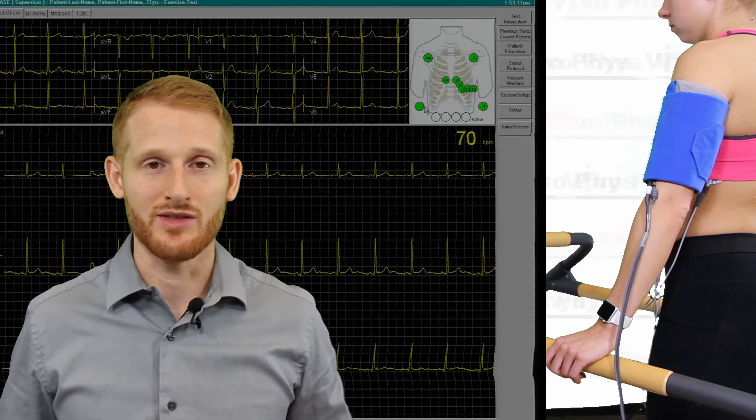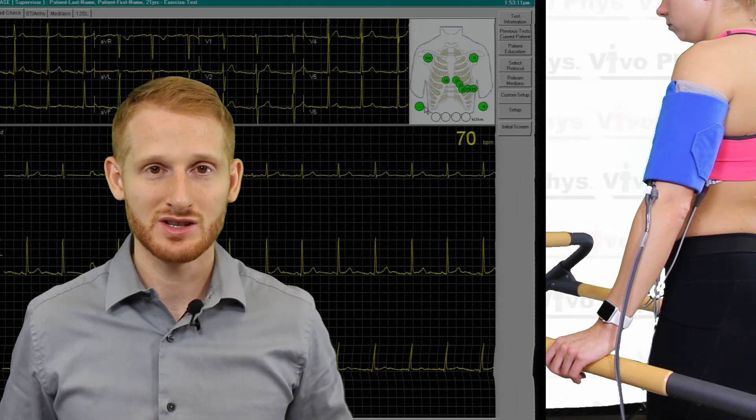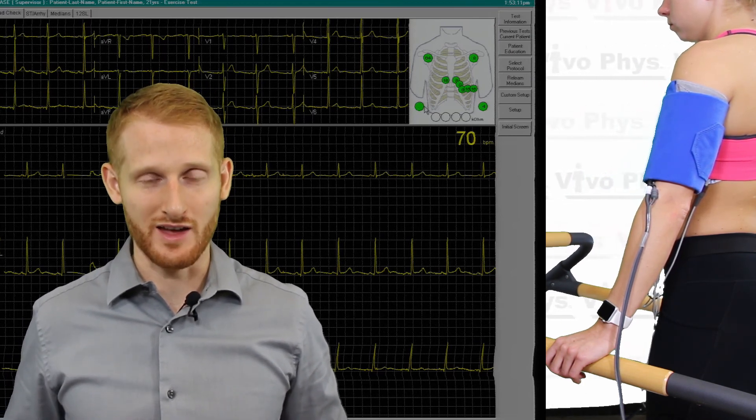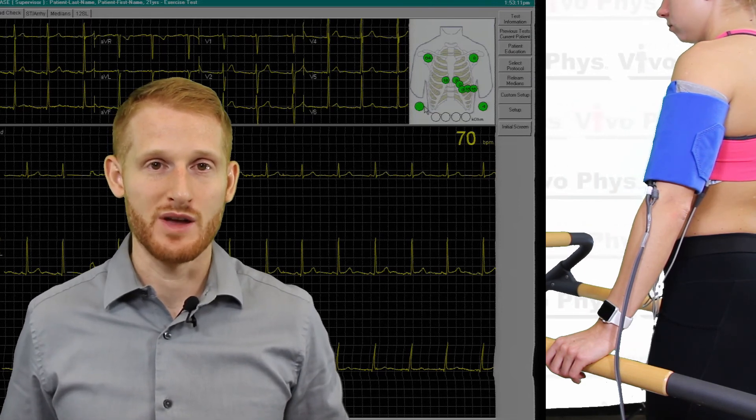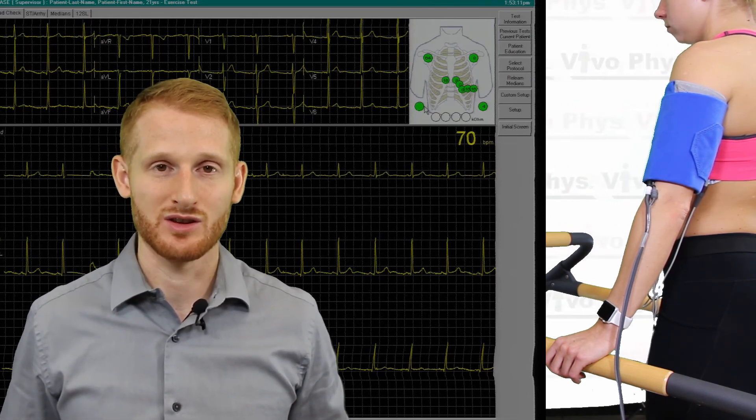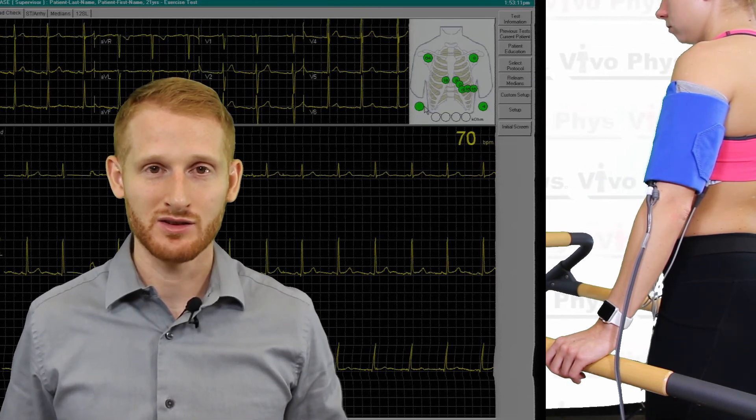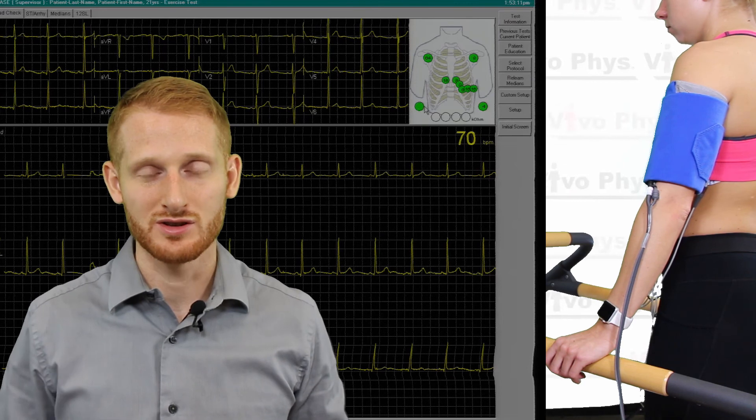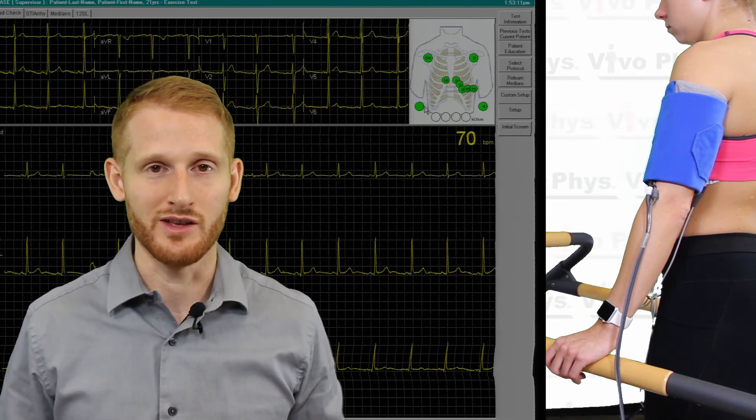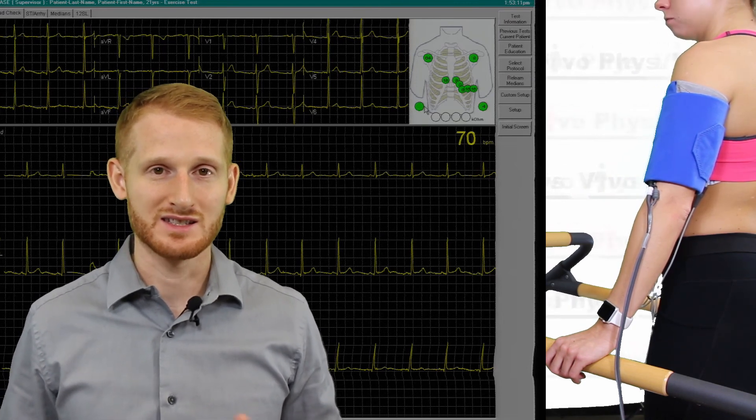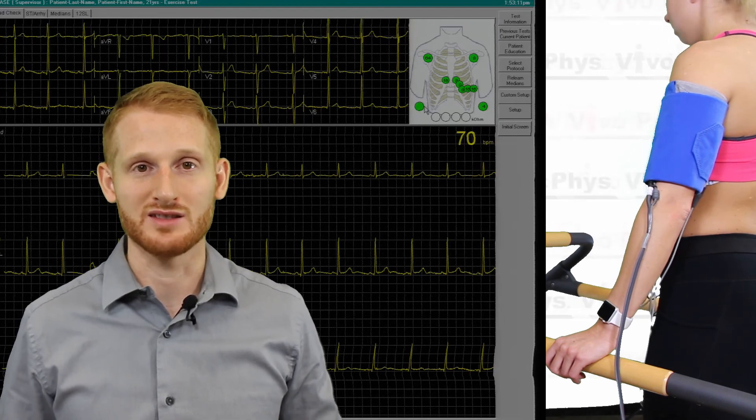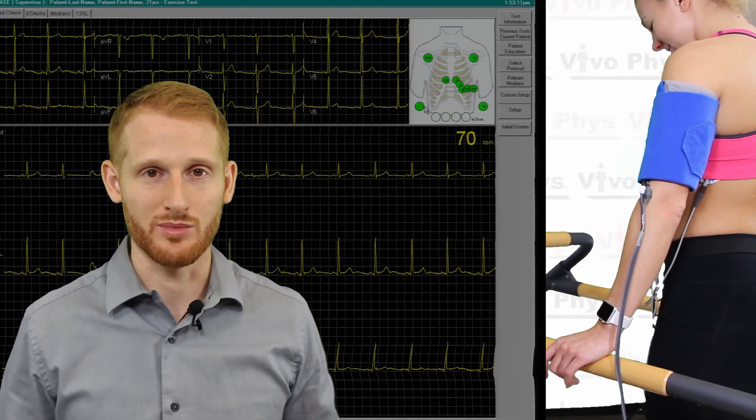Look at that diagram. Make sure all the electrodes are green. If they're not green, that means there's poor connection, and this is only going to get worse with exercise. Make sure that they're green at least at the beginning so that they can hopefully be a solid electrode for the entire test. If they're not green, try putting a little pressure. Make sure there's a good seal of the adhesive on the skin. If it's still not going green, I would replace the electrode and reprep that site.